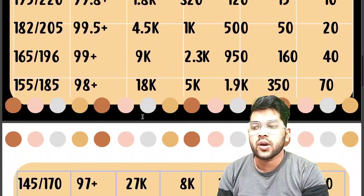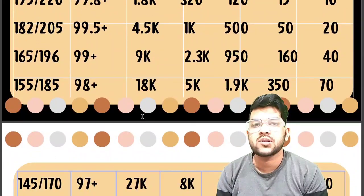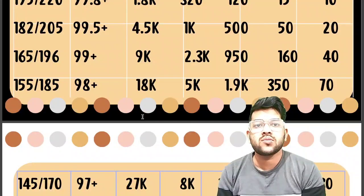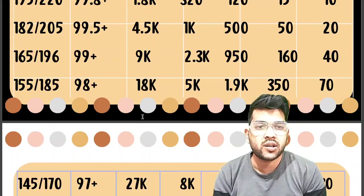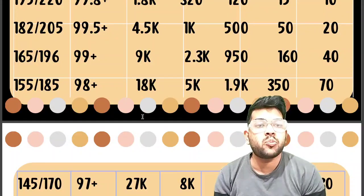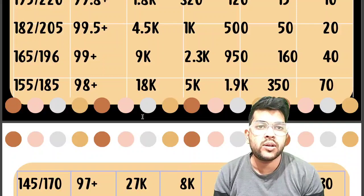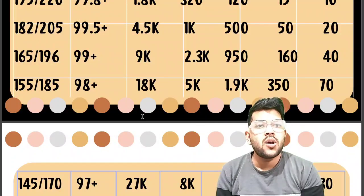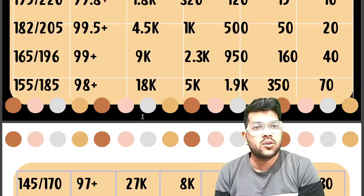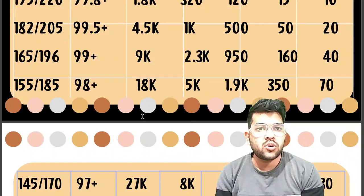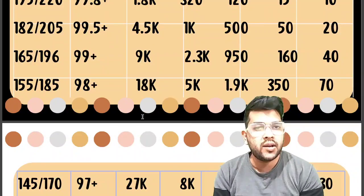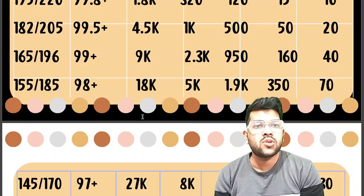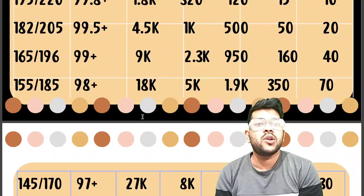For 97+ percentile, marks would be 145 for the first attempt and 170 for the second attempt. The corresponding ranks are: General 27,000, OBC 8,000, EWS 2,900, SC 550, ST 130. These data points are very tough to predict, but I have done extensive analysis having guided many students over the last three to four years. Based on previous year data — which was 100% correct — you can expect similar results for JEE 2023.